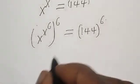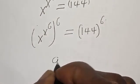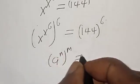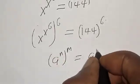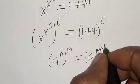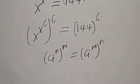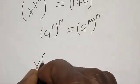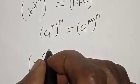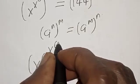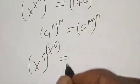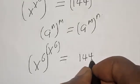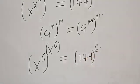On the left-hand side, remember: if you have a raised to the power of n raised to the power of m, it is the same thing as a raised to the power of m raised to the power of n. So we have s raised to the power of 6 raised to the power of s raised to the power of 6, is equal to 144 raised to the power of 6.